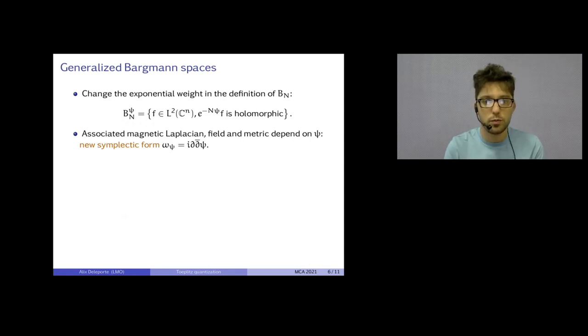Alright. But now, I want to generalize this picture. So, let's look again at the definition of Bn. And, okay, let's change things. Why did we take a Gaussian weight? We could just take any function psi, say, convex. Even pseudo-convex, if you know what pseudo-convex means, would work.